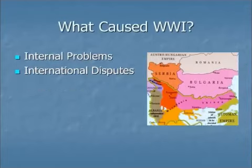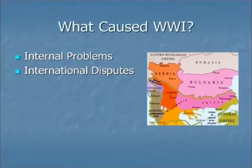There were internal problems in many of these countries, particularly in the eastern countries. There was a monarch in control of Austria-Hungary, Germany, and Russia, and they were unpopular. What's one thing that can make you popular? Well, war — particularly if you win. So these unpopular individuals facing a lot of internal pressure thought maybe war was a way to distract the people from these problems.